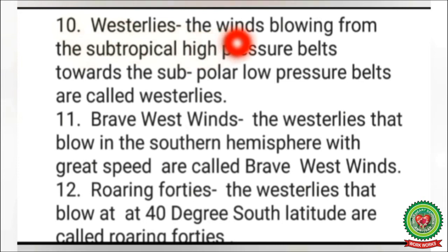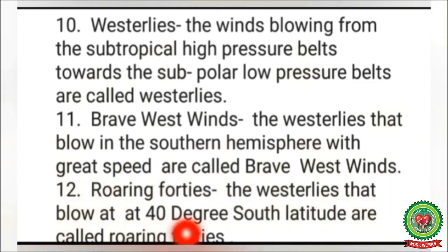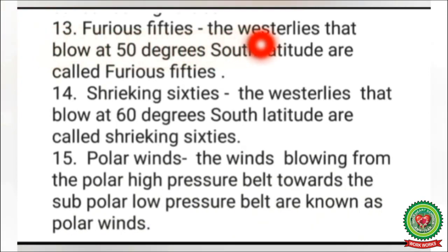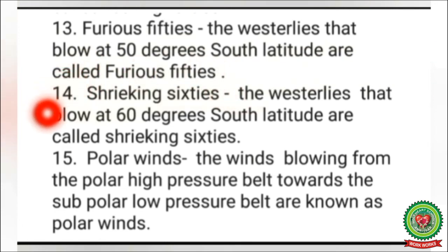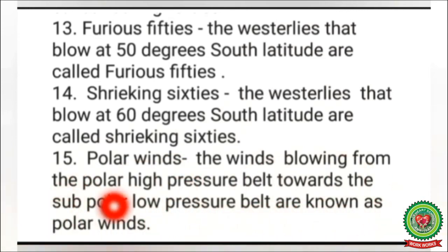Westerlies - the winds blowing from the subtropical high pressure belts towards the subpolar low pressure belts are called westerlies. Brave west winds - the westerlies that blow in the Southern Hemisphere with great speed are called brave west winds. Roaring Forties - the westerlies that blow at 40 degrees south latitude. Furious Fifties - the westerlies that blow at 50 degrees south latitude. Shrieking Sixties - at 60 degrees south latitude. Polar winds blow from the polar high pressure belt towards the subpolar low pressure belts.